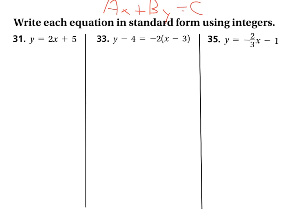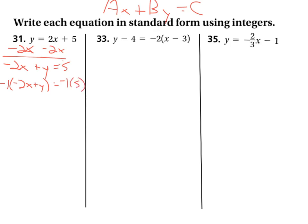For problem 31, the 2x is not in position — it needs to be on the left-hand side. When we subtract 2x from both sides we get negative 2x plus y equals 5. But we need a positive A value, so we multiply both sides by negative 1, switching the sign of everything, and we get 2x minus y equals negative 5.